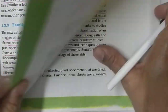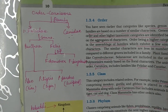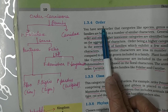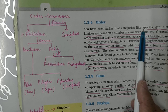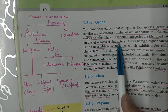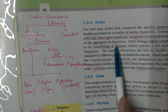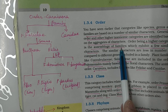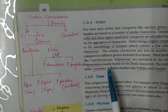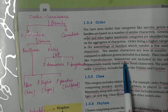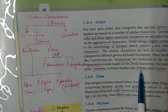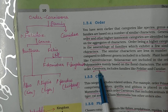Now let us take order. Order is a higher taxonomic category — it is the assemblage of families. All the families come together to form an order. For example, families Convolvulaceae and Solanaceae belong to order Polemoniales. Similarly, families Felidae and Canidae belong to order Carnivora.